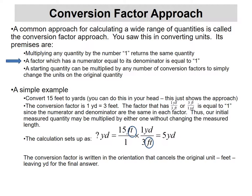For example, one dozen eggs is the same thing as 12 eggs. So if I put 12 eggs in the numerator and divide by one dozen eggs on the bottom, that is a value of one. They're the same thing on top and bottom, and I can multiply any number by that — all I'm doing is changing the units, not changing the actual quantity measured. That's the idea of the conversion factor approach.